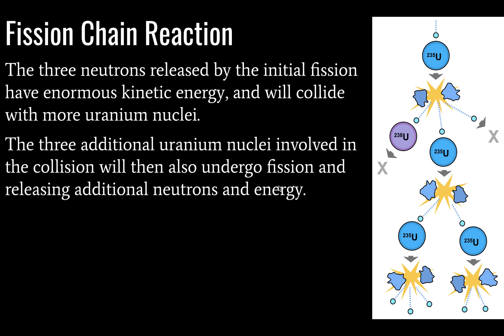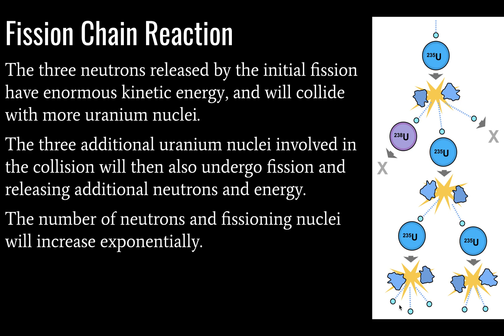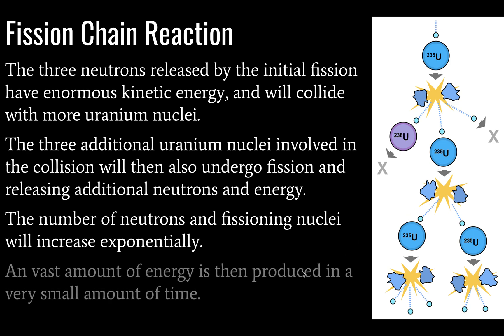The additional uranium nuclei will release a whole bunch of neutrons and energy. In this case, we have two, but normally you would just say we had three. So the number of neutrons and fissioning nuclei is going to increase exponentially. We're increasing the number of neutrons by one or two every time we undergo this fission. So that's what we would expect for exponential growth.